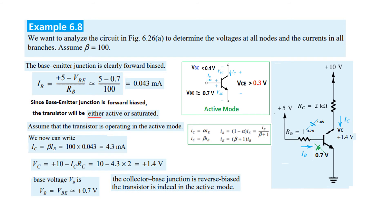The collector-base junction is reverse biased. How? This end is 0.7V, this end is 1.4V. In an NPN transistor, N is connected with the positive and P is connected with the negative, therefore this is reverse biased. If the base-emitter is forward biased and base-collector is reverse biased, then the transistor is definitely in active mode. All our assumptions were correct.